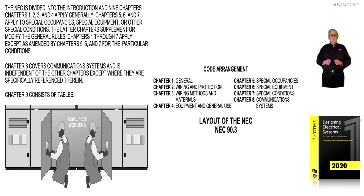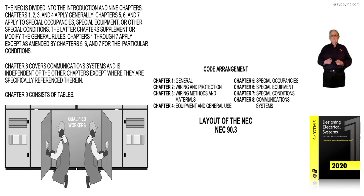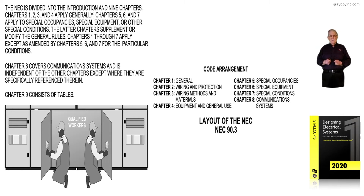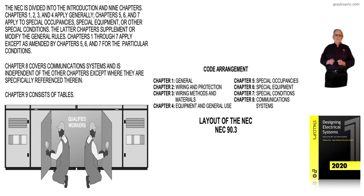Chapter 2, wiring and protection, is usually the design chapter in the electrical industry. Of course, design could be mainly by an engineer, but it could be a contractor or even an electrician adding circuits, branch circuits, and outlets for lighting and plugs and so forth.